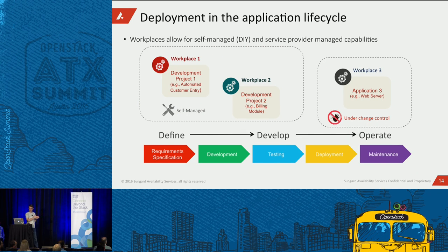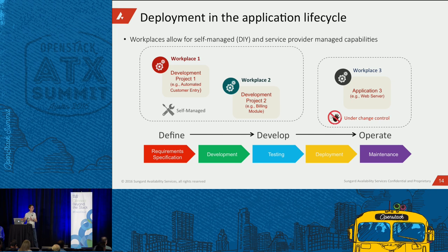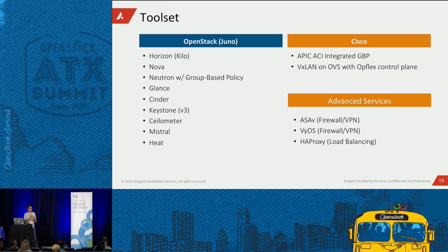Workplaces are typically used for dev/test and then for a locked-down managed production environment. We customized OpenStack policy files to block certain APIs from certain workplaces so customers can hand control to us — they can't destroy VMs or make changes in managed workplaces, while dev/test workplaces are open. Our stack is Juno for most components, Kilo for Horizon. We use Nova, Neutron, Glance, Cinder, Keystone, Ceilometer, Mistral, and Heat. The biggest Neutron change is group-based policy.